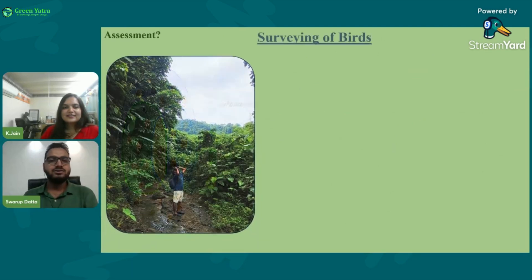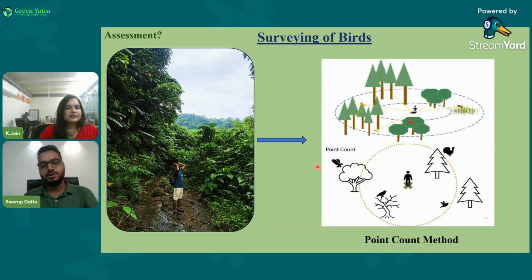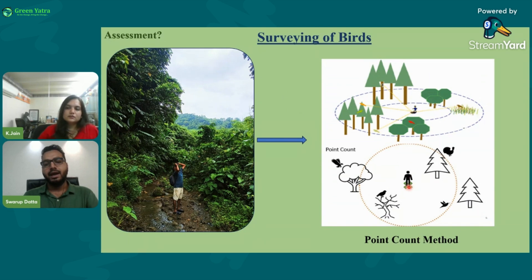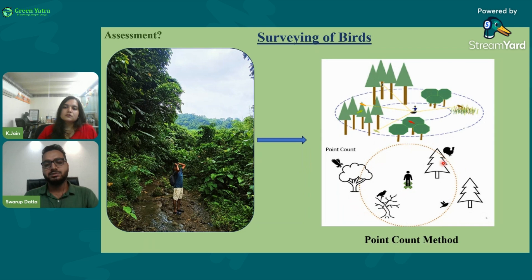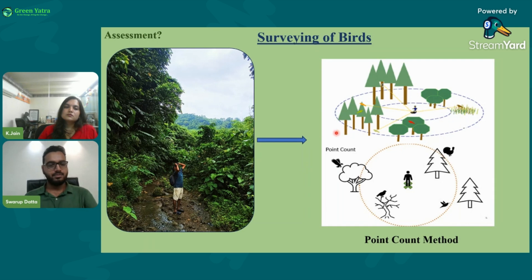To survey birds, we use the point count method. A person stands at a point and counts the number of birds and species surrounding them. Then they move to another location and repeat the process — standing at the point and counting the number of birds present in the area.